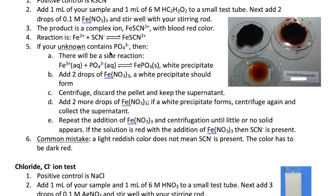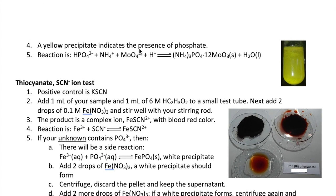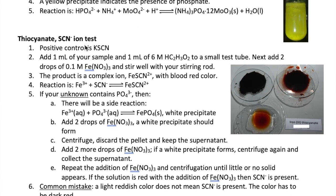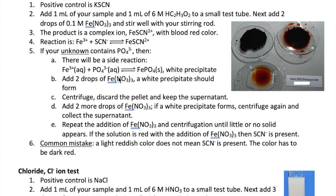Now, there's a potential problem with this test, which is if phosphate is present. Recall that in the previous test, you already figured out whether phosphate is present or not in your unknown sample. So if phosphate is present, then when you add your iron nitrate, instead of getting a blood red solution, you're going to see a white precipitate instead. The precipitate is iron phosphate, and it will interfere with your detection of thiocyanate. So, you'll have to remove all the phosphate first before you can test for thiocyanate.